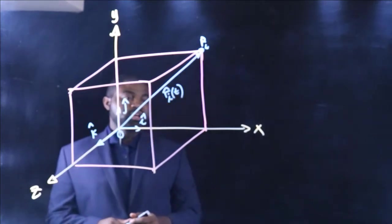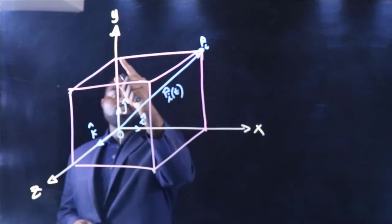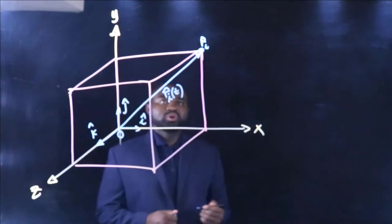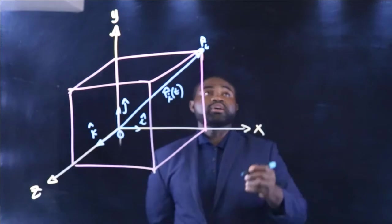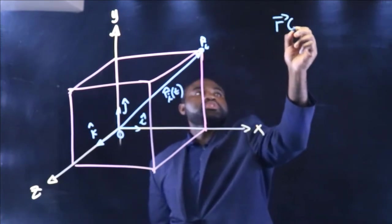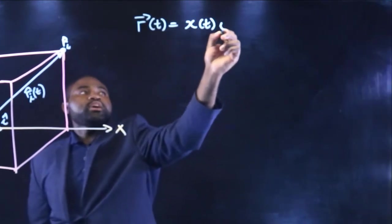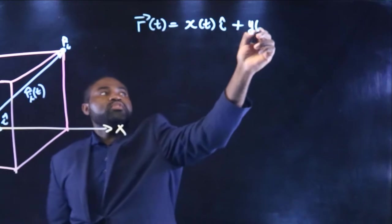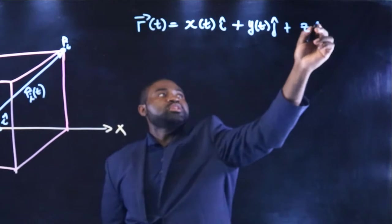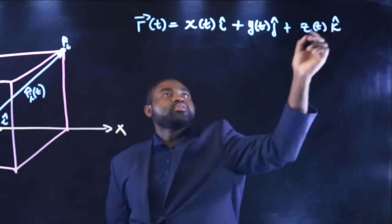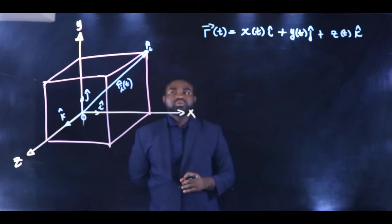This position vector is R, let us call this Ri, and it is a function of time. So, you will recognize that R has an X component, a Y component, and a Z component. The position vector of this particle can be written as R(t) = X(t)I + Y(t)J + Z(t)K. This represents the position vector of the particle.